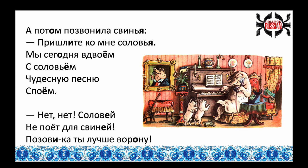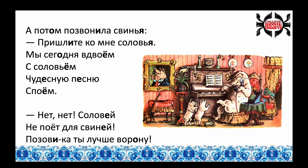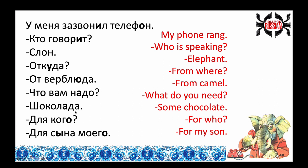That's only the first part of this poem — it's an adorable poem but it goes on a little too long for this video. So we're going to stop there and now do the English translation. У меня зазвонил телефон. Кто говорит? Слон. Откуда? От верблюда. Что вам надо? Шоколада. Для кого? Для сына моего.